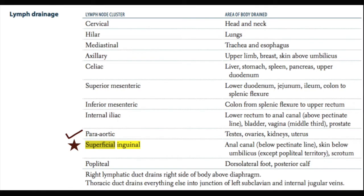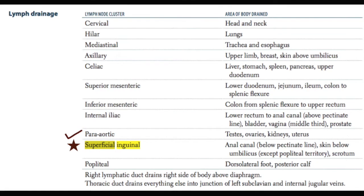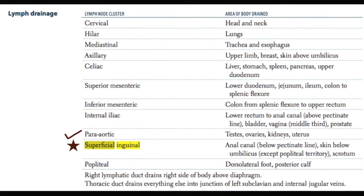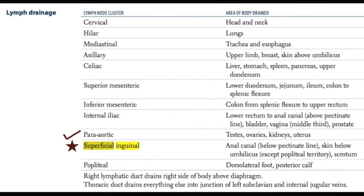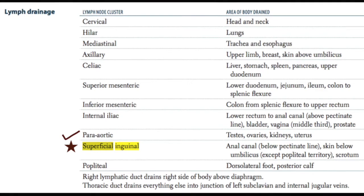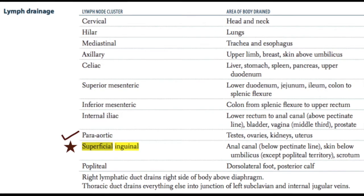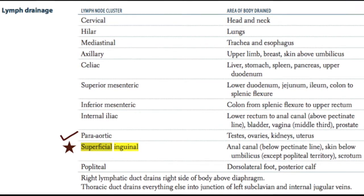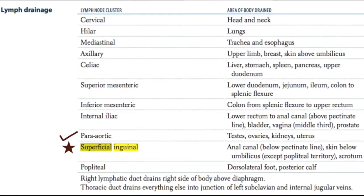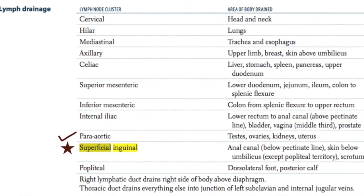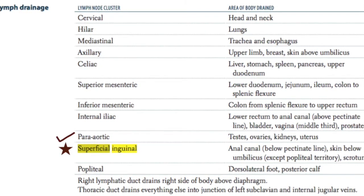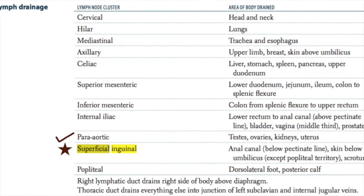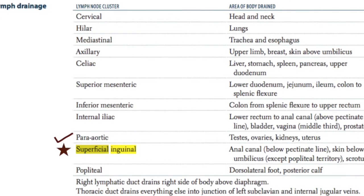This whole chart — this table — is in your First Aid. You can use it or make your own; it's always useful to memorize this table. This topic was tested in the past with testicular cancer, and the recent one was external hemorrhoids.